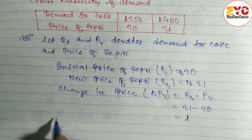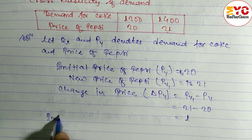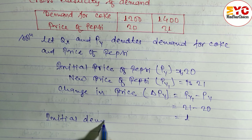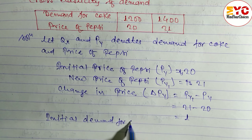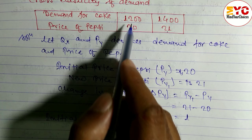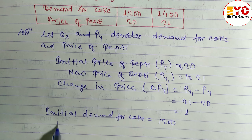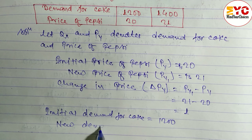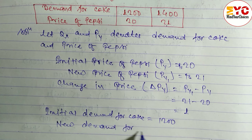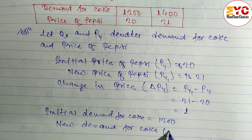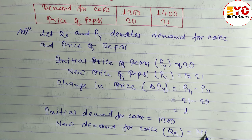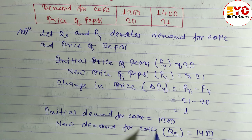Now we write the initial demand for Coke: Qx is equal to 1200 units. And the new demand for Coke: Qx1 is equal to 1400.